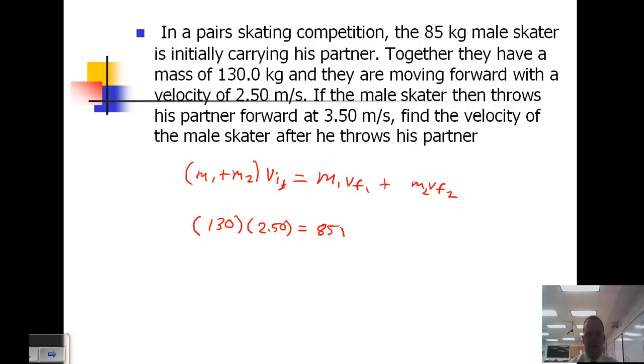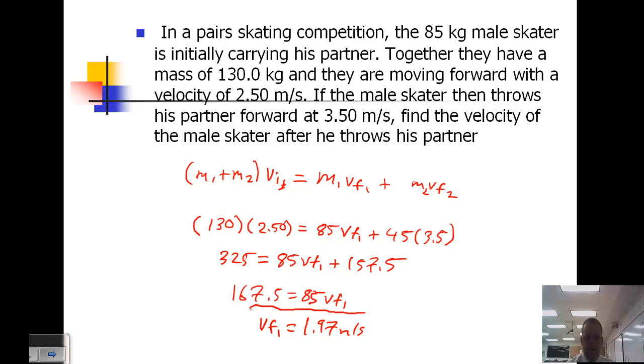So we have 130 times 2.5. We have the male skater 85 times V_final1. We have the female skater - it's 45 kilograms, 130 minus 85, going to travel at 3.5. So 130 times 2.5, we get 325 equals 85 V_final1 plus 45 times 3.5, which is 157.5. Subtract 157.5 from both sides. We get 167.5 equals 85 V_final1. Divide by 85, and this skater ends up moving at a slower speed of 1.97 meters per second.